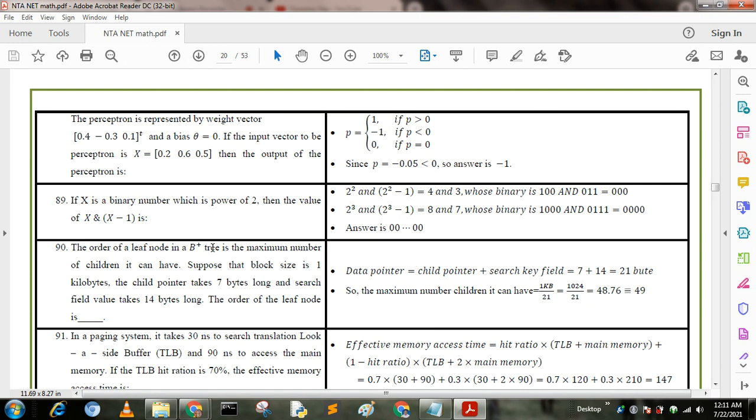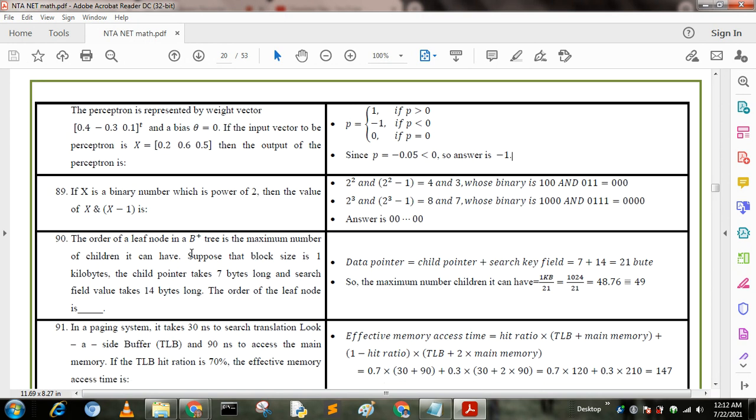Next question: the order of a leaf node in a B plus tree is the maximum number of children it can have. Suppose that block size is 1 kilobyte, the child pointer takes 7 bytes long, and search field value takes 14 bytes long. The order of the leaf node is: from the formula we know that data pointer equals child pointer plus search key field equals 7 plus 14 bytes equals 21 bytes. So the maximum number of children it can have is 1 kilobyte by 21, that is 1024 by 21. We approximate the value, we get 49. If you want more videos, please subscribe and like my videos and press the bell icon.